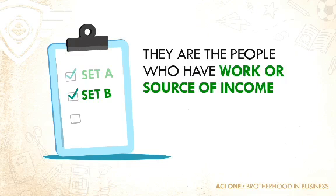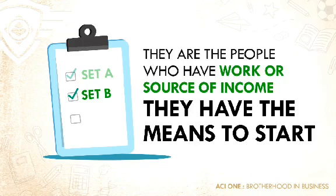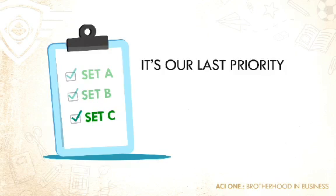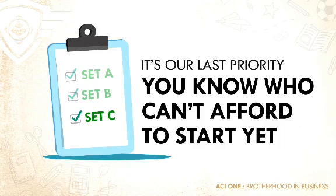Set B people can join because they have the means to start the business. Set C is our last priority — they are the people you know who can't afford to start yet.